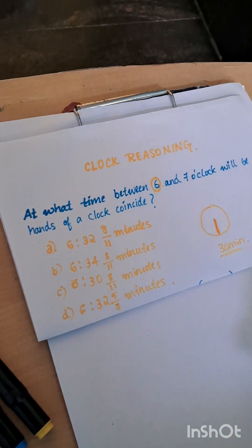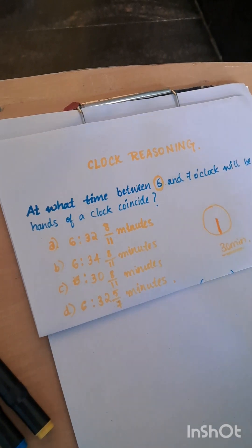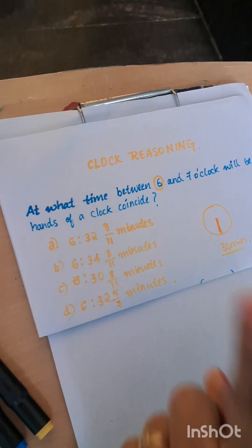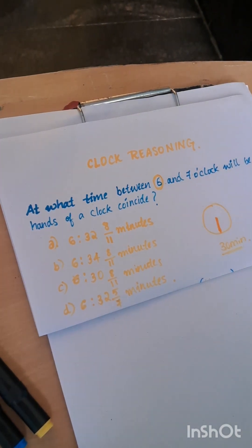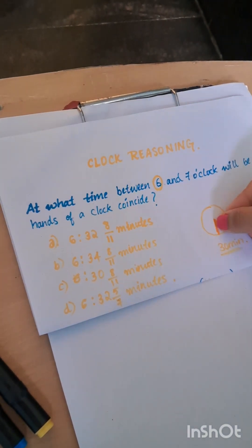Coincide means both minute hand and hour hand should be in the same line, they should come upon each other. So in that case, between 6 and 7, it would be on 6, which in minutes is 30 minutes.